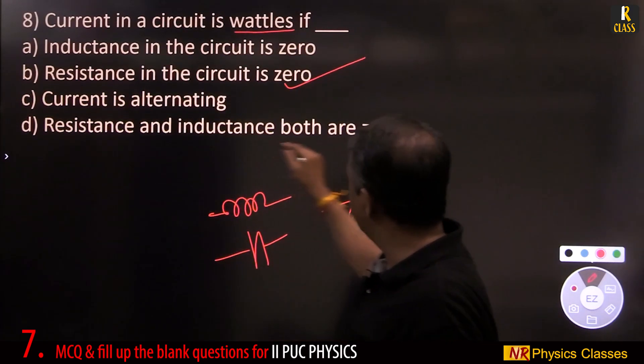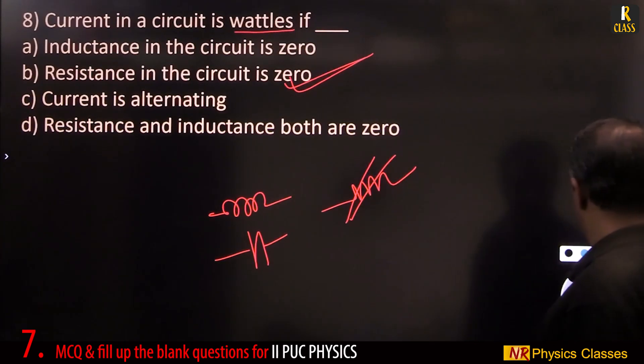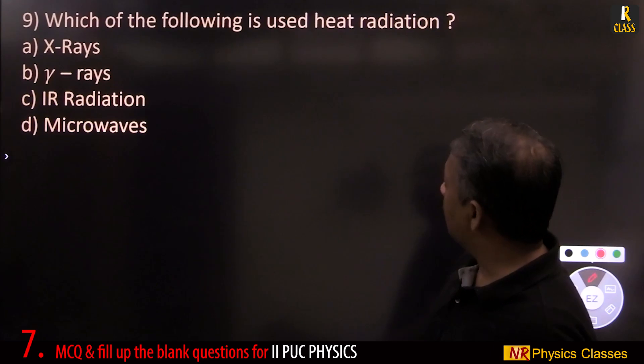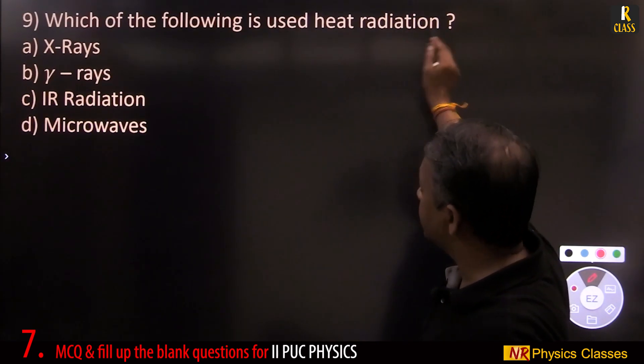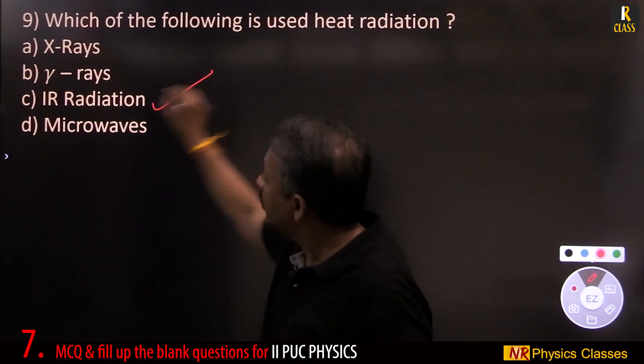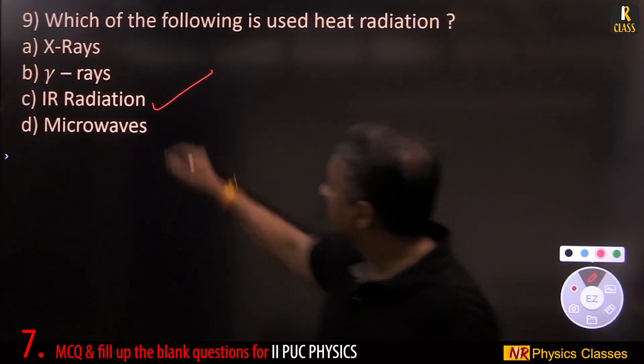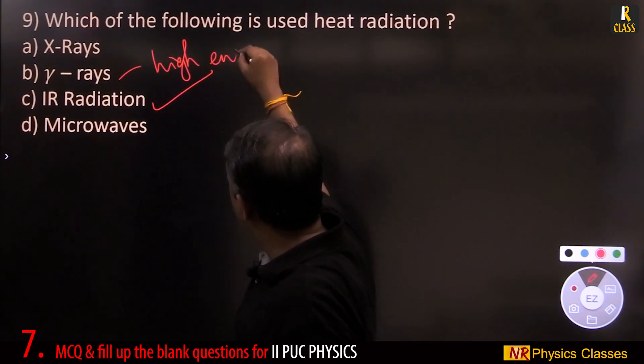Current is alternating. Resistance and inductance both are 0. Which of the following is used as heat radiation? IR radiation. Infrared is heat radiation. This is high energy.